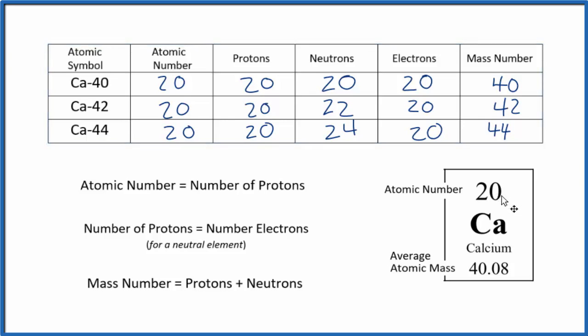Those are the numbers you should have gotten for the protons, neutrons, electrons, and mass number for calcium. If you got something different, there's a link in the description and a card with a full video on how to do this. This is Dr. B discussing how to find the protons, neutrons, electrons, and mass number for elements. Thanks for watching.